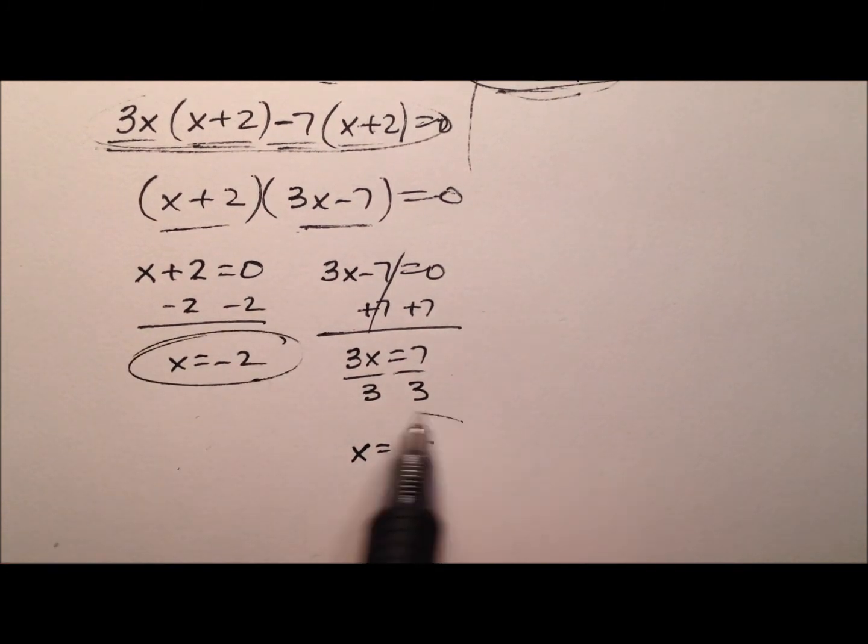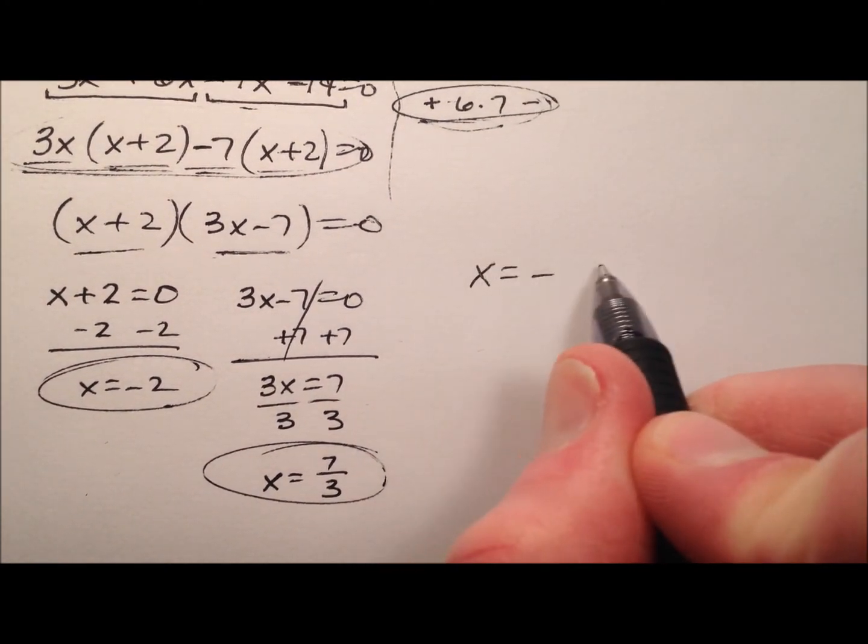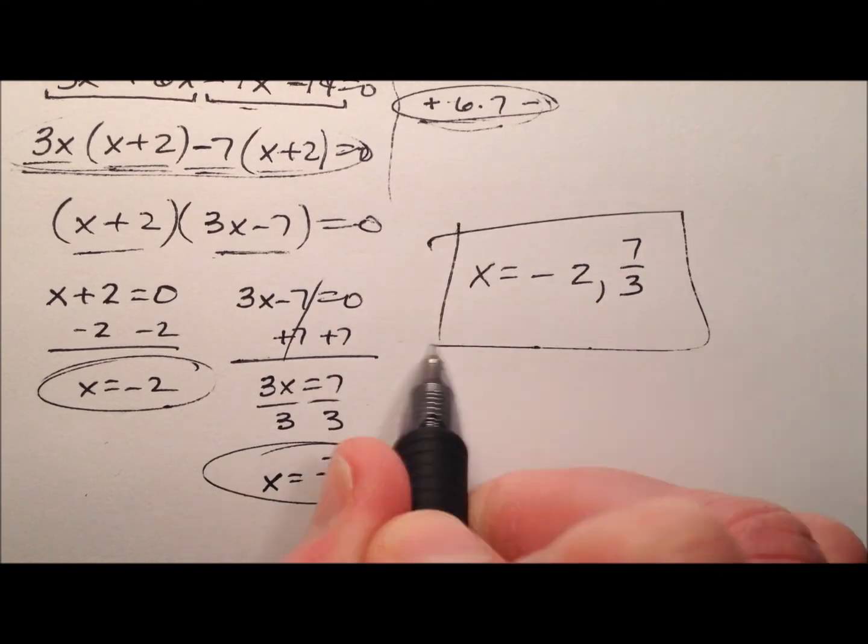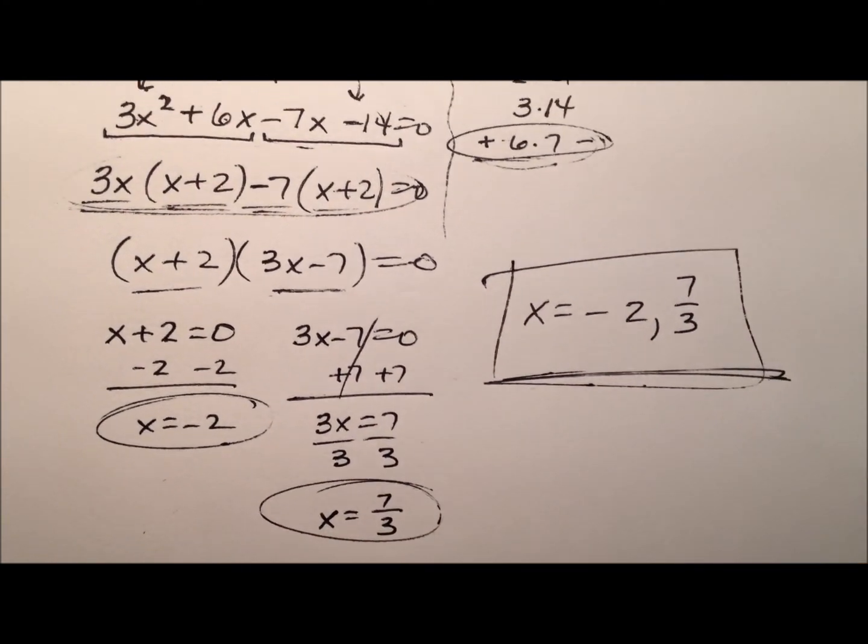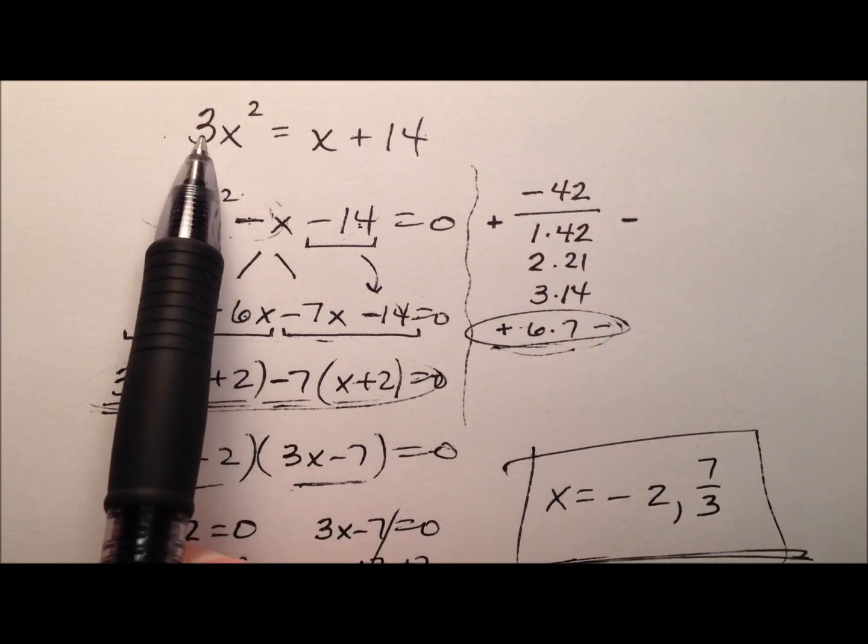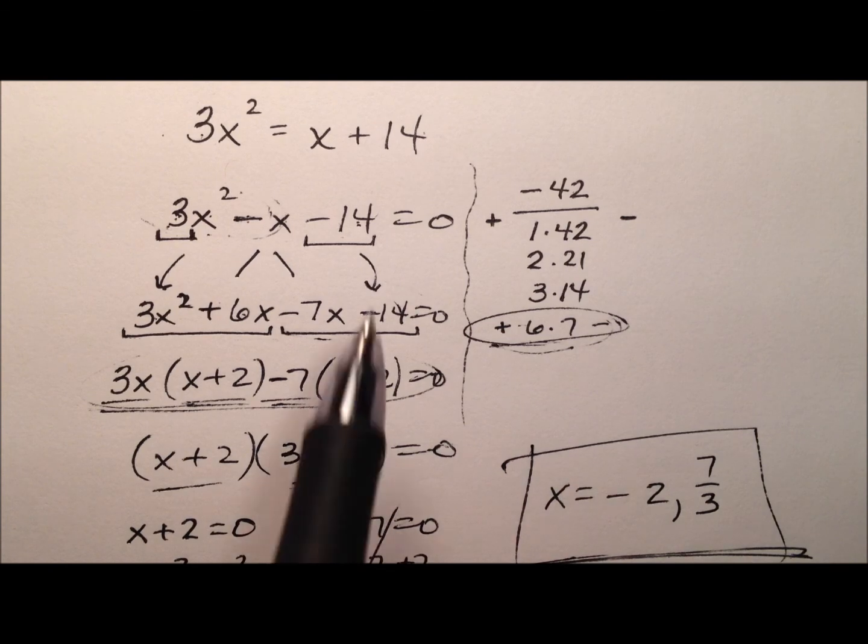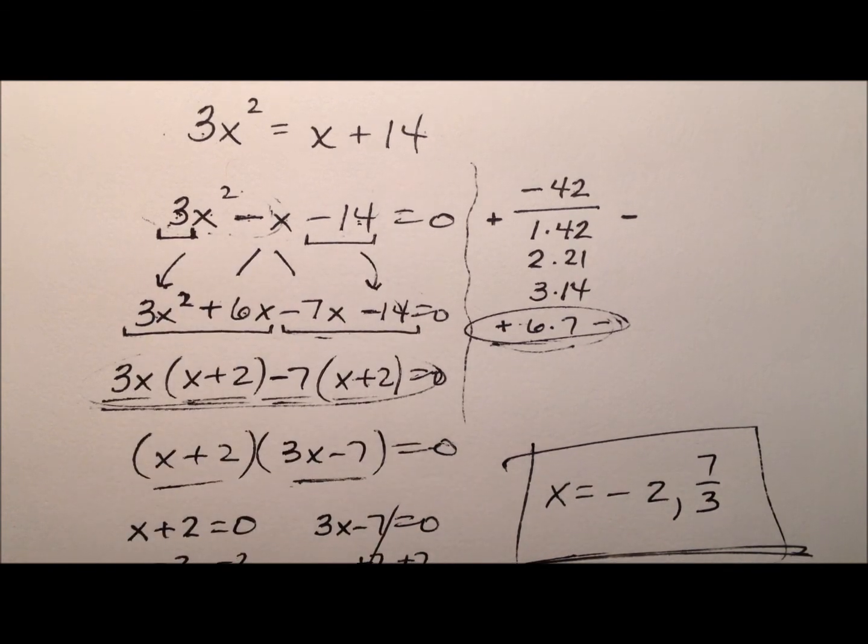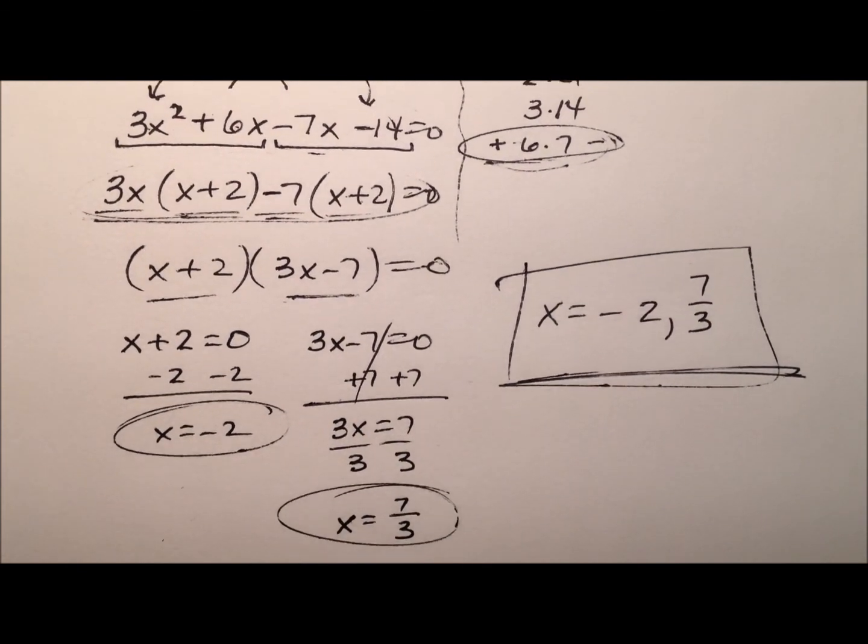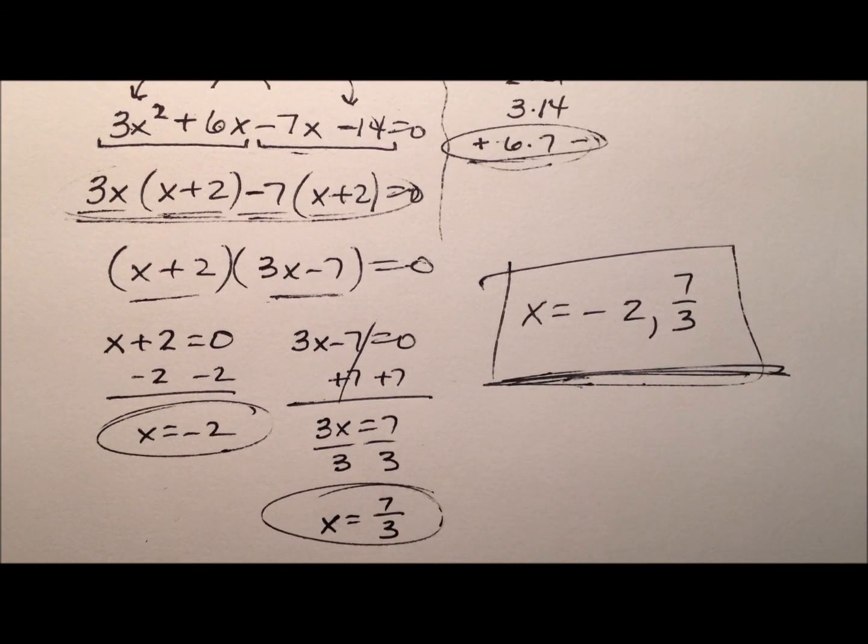So here then are our two values or our two solutions. We can say x equals negative 2 and positive 7 thirds. Looking back at the top, our original quadratic equation was 3x squared equals x plus 14, and we got all the terms on the left side and we factored that quadratic expression, and then we used our zero property of multiplication and we found that the solutions are negative 2 and 7 thirds.